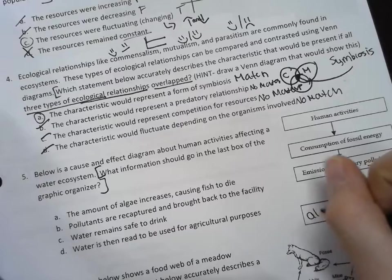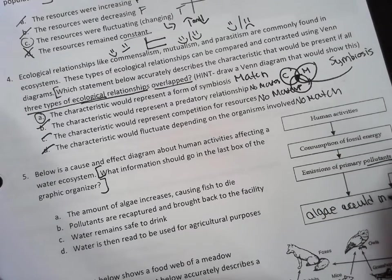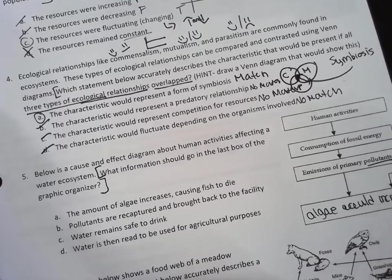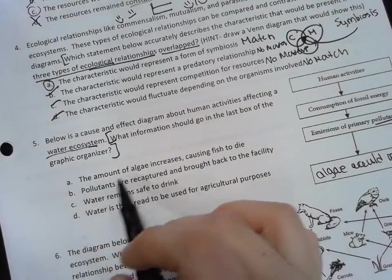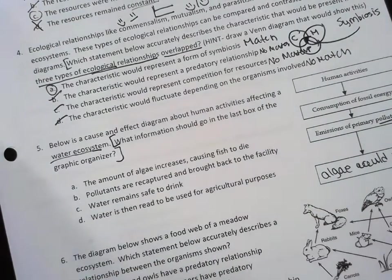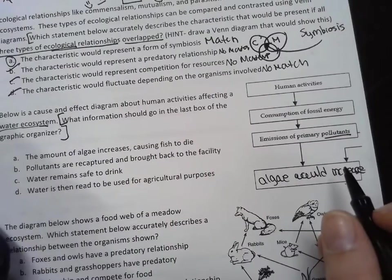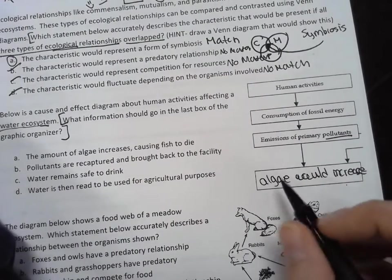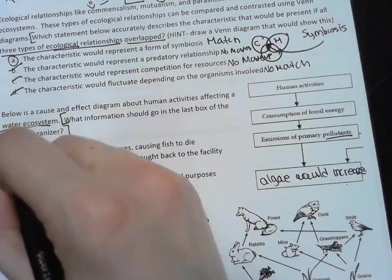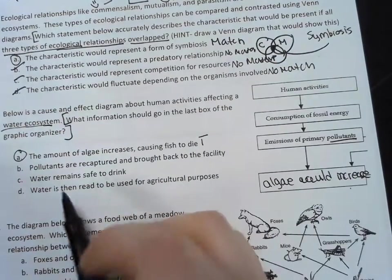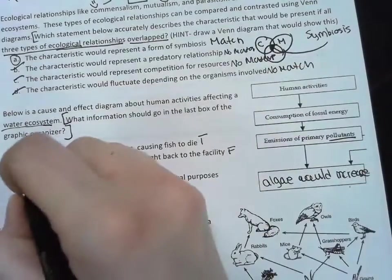Alright, so if I go here, a pollutant is a chemical, so I can assume that algae would increase, at least in a water environment, which this is. Alright, so A: the amount of algae increasing causing fish to die - oh yeah, there's a lot of algae, it limits the amount that the fish can actually breathe because the algae is taking up all the oxygen. So this seems to be the right answer to me. Pollutants are recaptured and brought back to the facility - that's really hard to do, so that's false.